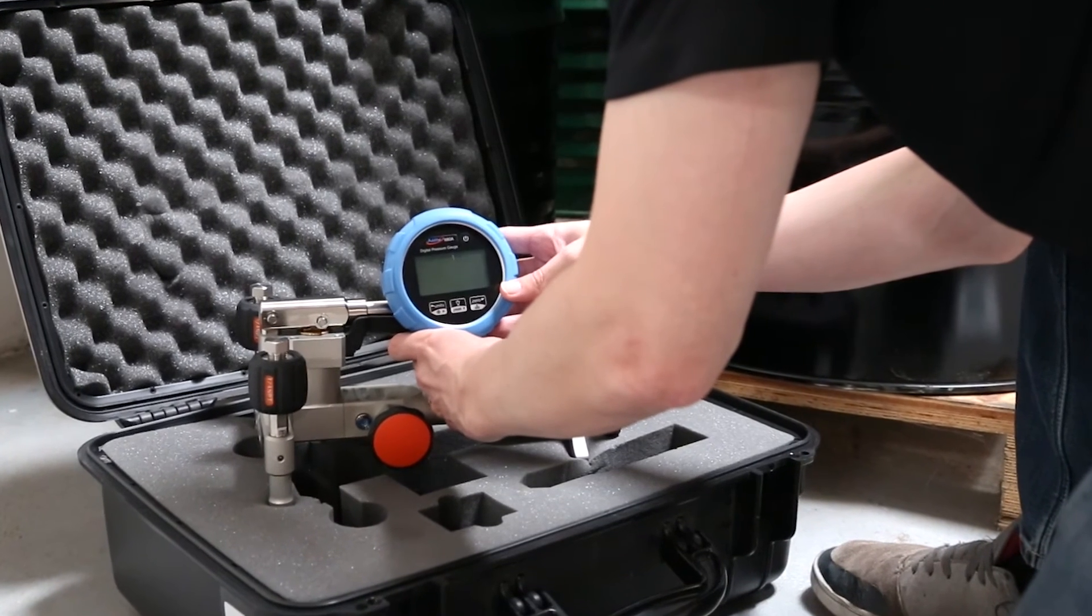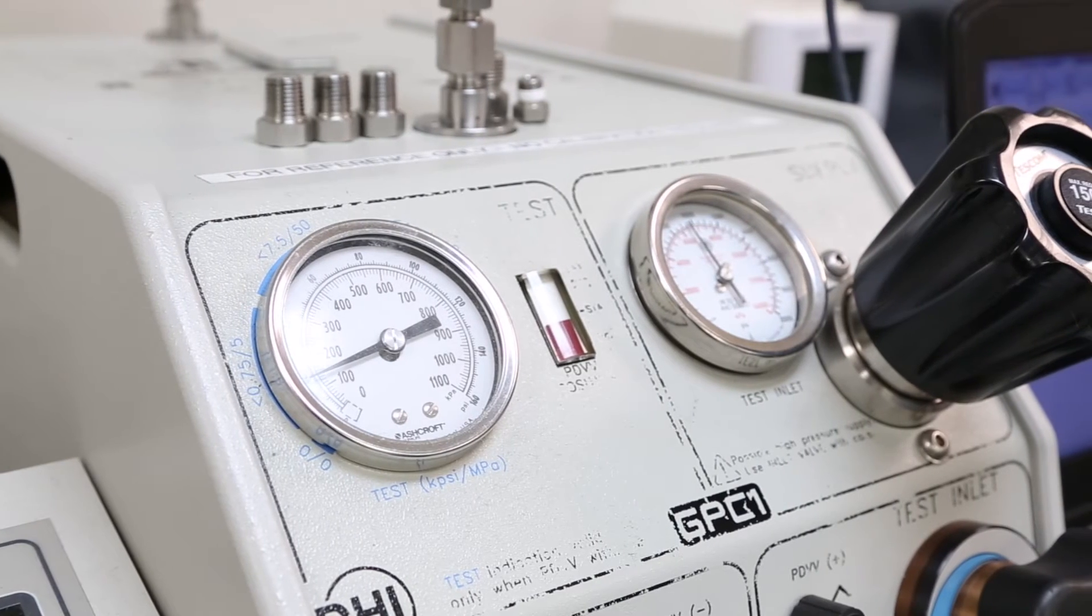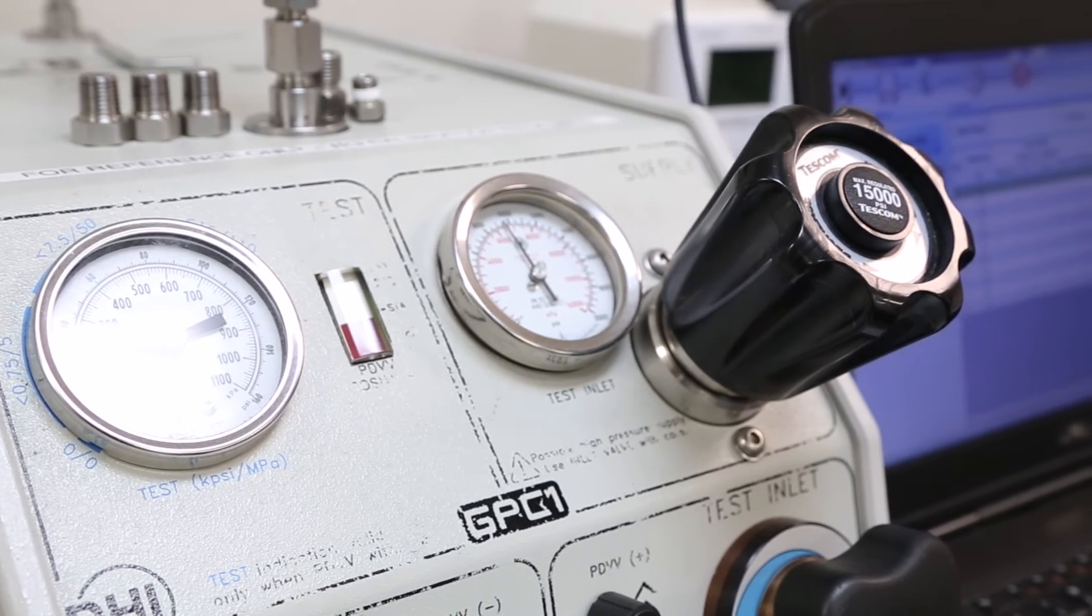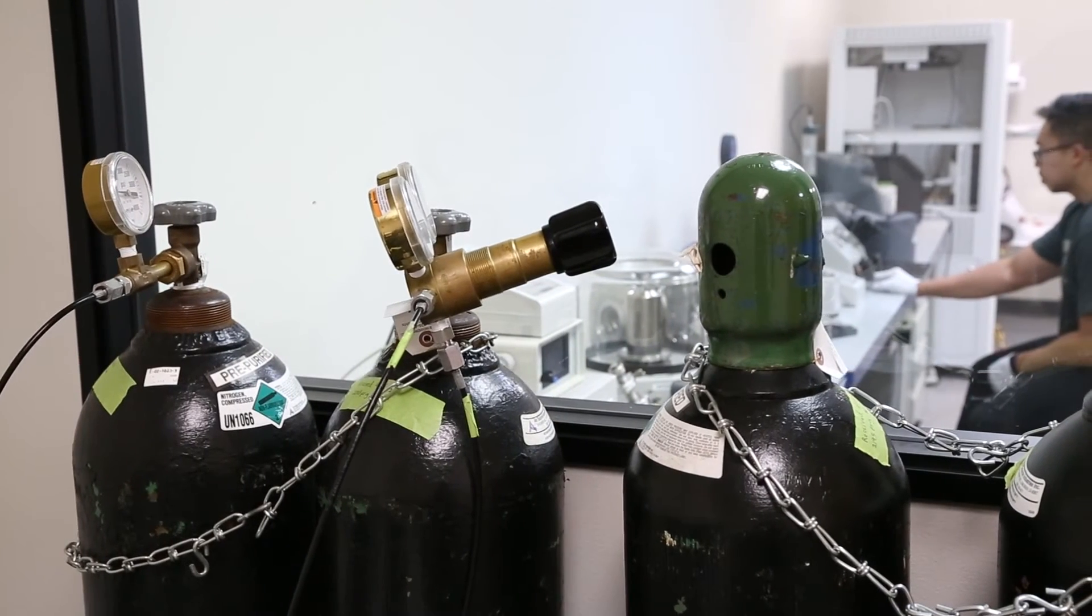To keep the piston in the deadweight tester afloat, pressure is needed to offset the amount of mass on top of the piston. To do this effectively, a pressure supply, most commonly either a gas bottle containing nitrogen or an electronic pump, is connected to a pressure controller.